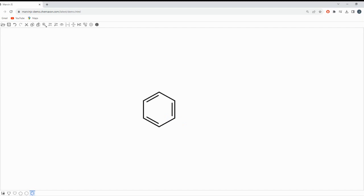Now that we're familiar with the interface, let's explore some basic drawing tools. Let's try to draw a simple drug structure like paracetamol. To start, select the benzene tool from the toolbar. Click anywhere on the canvas to add it.